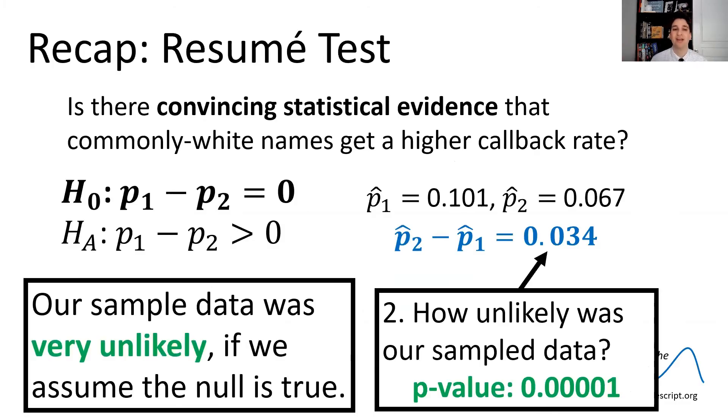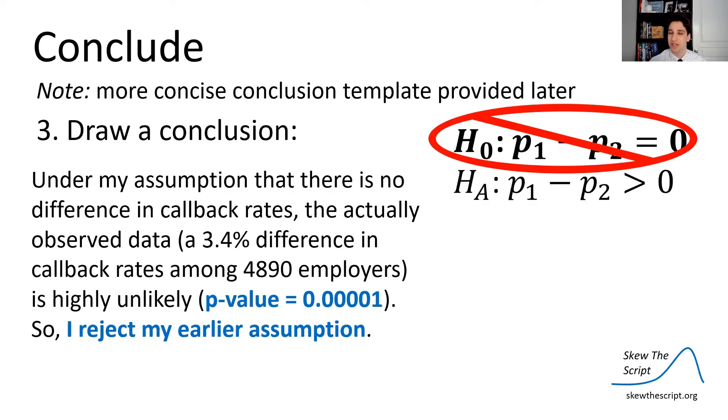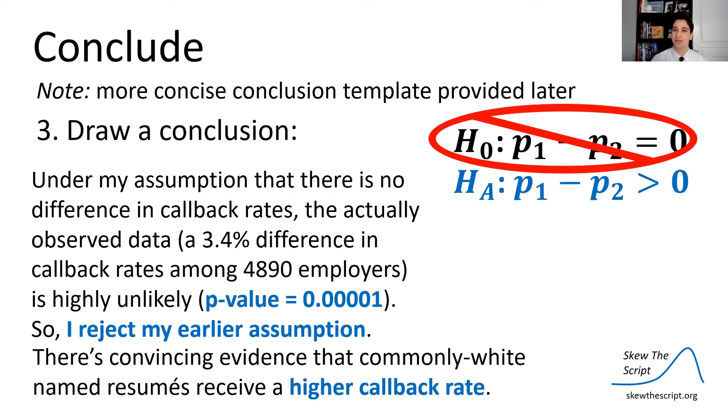So very unlikely. So our sample data was very unlikely if we assumed the null is true, so we're going to start to doubt the null is true. Let's draw a conclusion. Under my assumption that there is no difference in callback rates, the actual observed data is very unlikely. So I'm going to reject that earlier assumption, given the data that I found, and the data shows me that there is convincing evidence that commonly white name resumes received a higher callback rate, or will receive a higher callback rate among similar jobs if you do this for everyone.